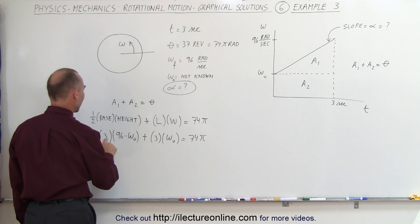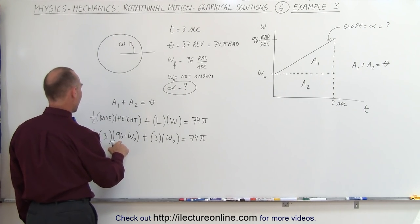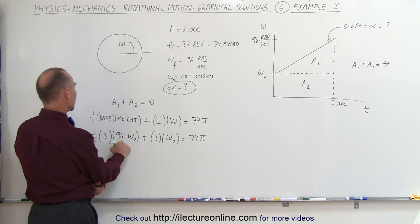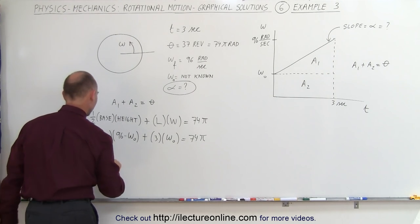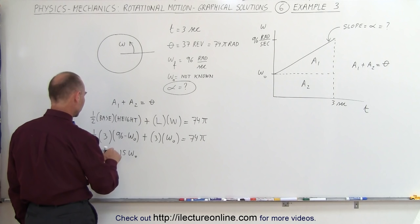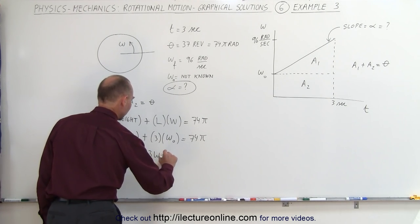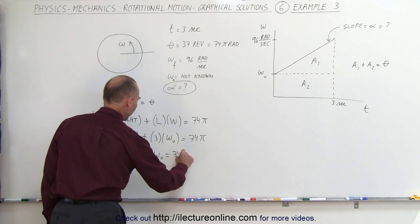One half times three is one and a half times 96. 96 times one and a half, that would be 48 added to that. That's 144. 144 minus 1.5 omega sub naught. Plus 3 omega sub naught equals 74π.